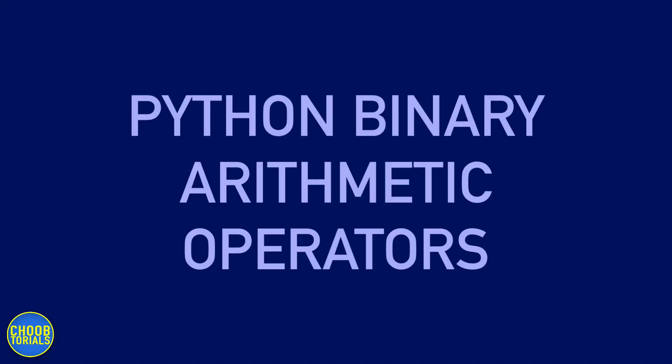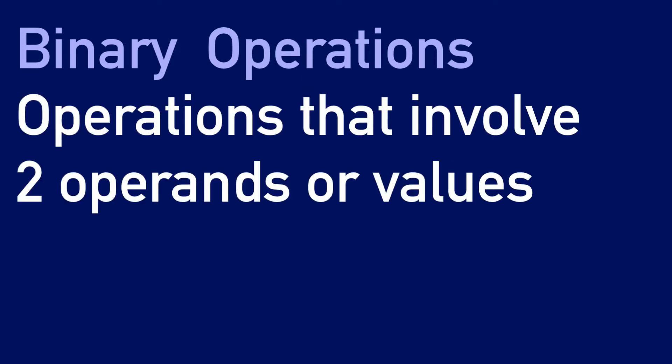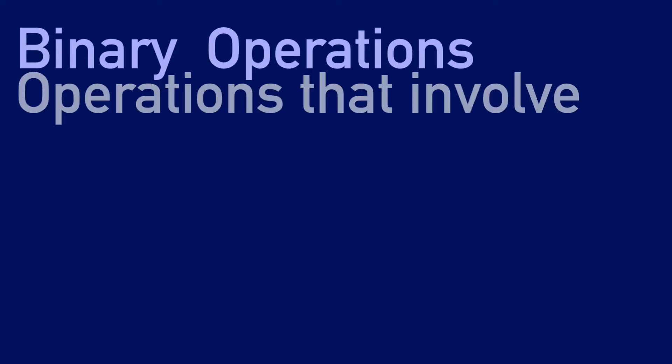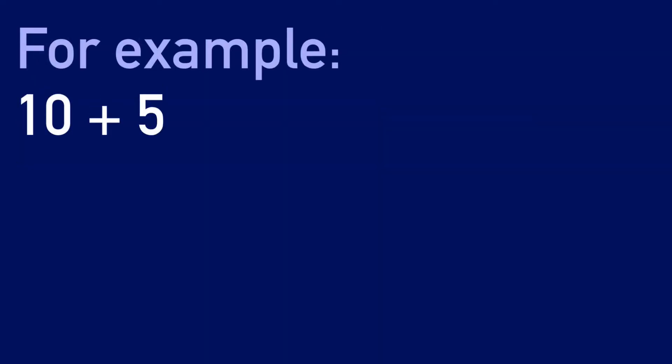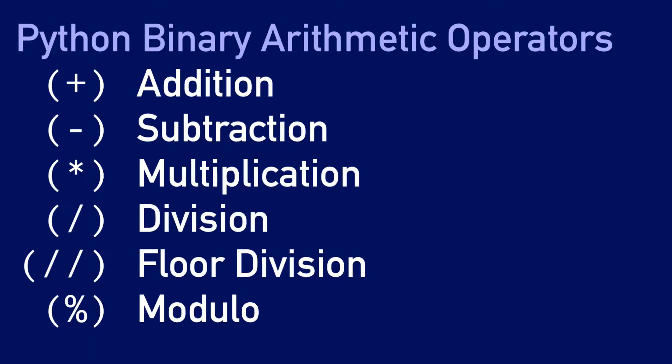Hi everyone! In this video, we are going to take a look at what are called binary arithmetic operators. In this context, we are using the word binary to refer to operations that involve two operands or values. For example, 10 plus 5 is a binary operation because it involves two values, 10 and 5. Here are Python's binary arithmetic operators.